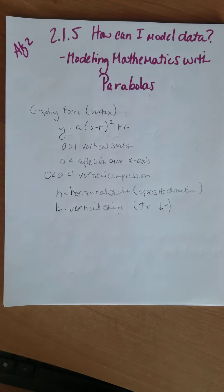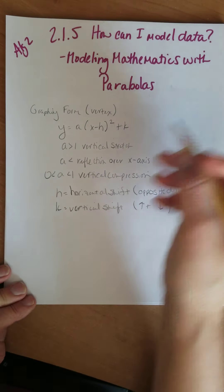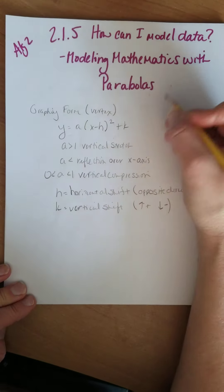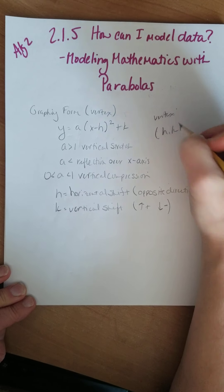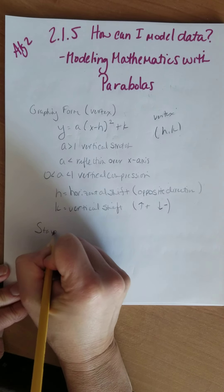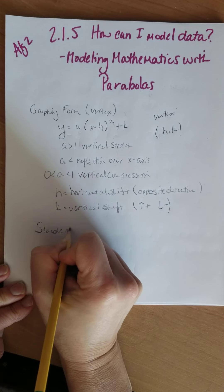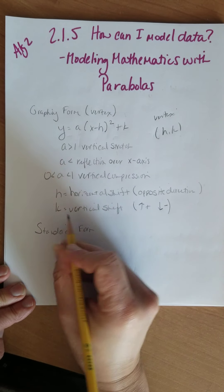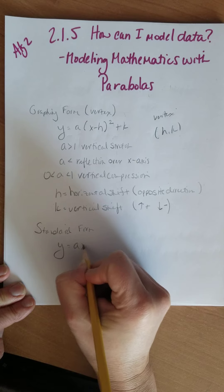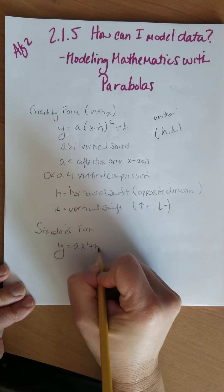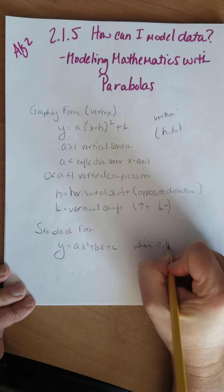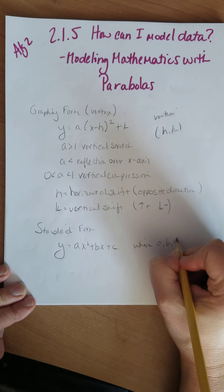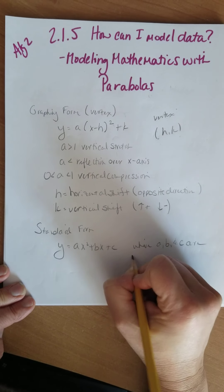The horizontal shift is the only one that's a little different. In graphing form, your vertex is found at the point (h, k). Standard form is also useful. Its form is y equals ax squared plus bx plus c, where a, b, and c are real numbers.